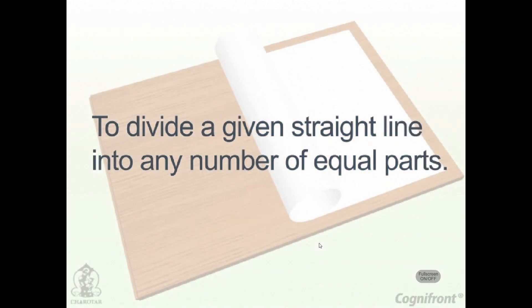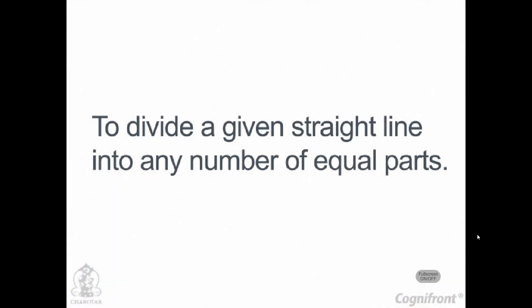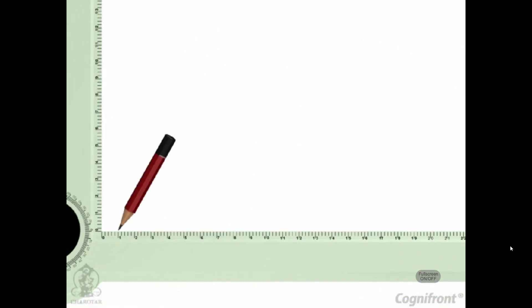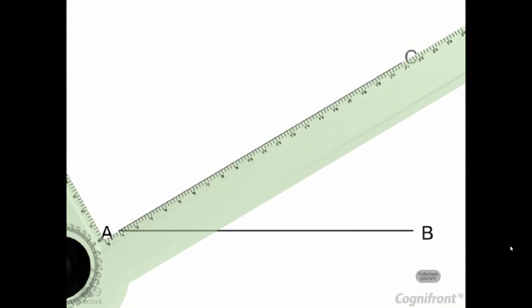Now we will take a look at how to divide a line into 7 equal parts. First consider line AB of any length and draw line AC making an angle of less than 30 degrees with AB.